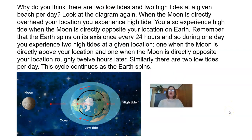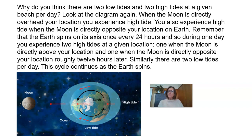Why are there two low tides and two high tides at a given beach per day? When the Moon is directly overhead your location, you experience high tide. You also experience high tide when the Moon is directly opposite your location on Earth. The Earth spins on its axis once every 24 hours, so during one day you experience two high tides — one when the Moon is directly above your location, and one when the Moon is directly opposite, roughly 12 hours later. Similarly, there are two low tides per day, and this cycle continues as the Earth spins.